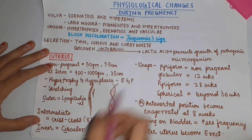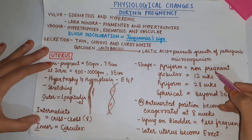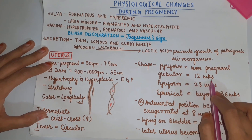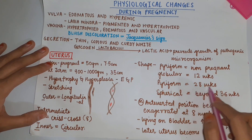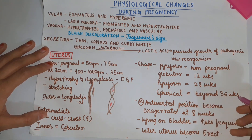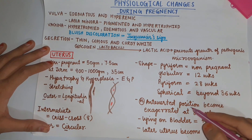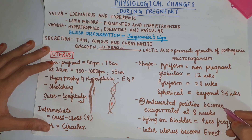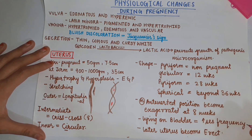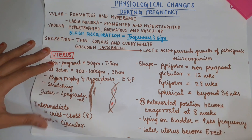The uterus is piriform in non-pregnant women. It becomes globular at 12 weeks, piriform at 28 weeks, and spherical beyond 36 weeks. The normal anteverted position of the uterus becomes exaggerated at 8 weeks because it lies on the bladder, exerting pressure on the bladder causing increased frequency of urination. In later pregnancy, the uterus becomes erect.